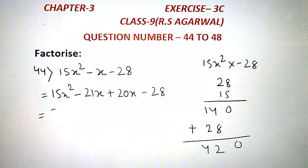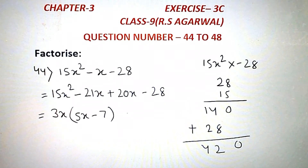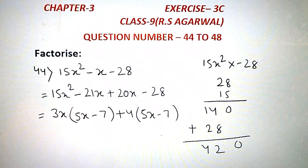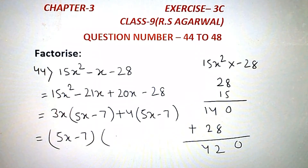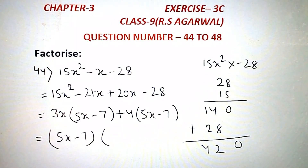Take 3x common, so write 5x minus 7. Now take plus 4 common, so write 5x minus 7. Then 5x minus 7 is common, so take it common — 3x plus 4 remains. So we write (5x minus 7)(3x plus 4).